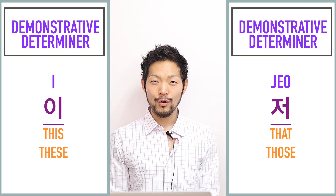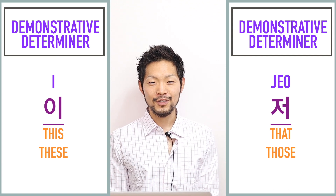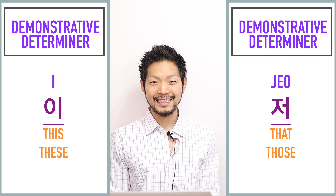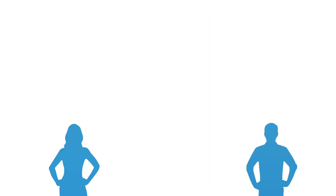In the previous lessons we learned how to say 이 (this) and 저 (that/those). Finally today we're going to study the last demonstrative determiner: 그. This one is a bit tricky because it's something in between 'this' and 'that.' More precisely, it indicates something that is relatively further away from the speaker while still being close to the listener.